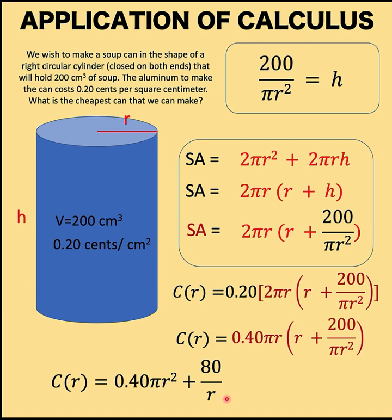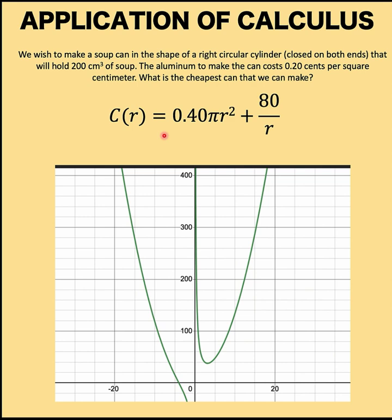Let's distribute 0.40πr to this binomial to arrive at this simplified form. This is now our cost function. And let's remember that this r cannot be 0. In fact, r must be greater than 0 because we are measuring radius.